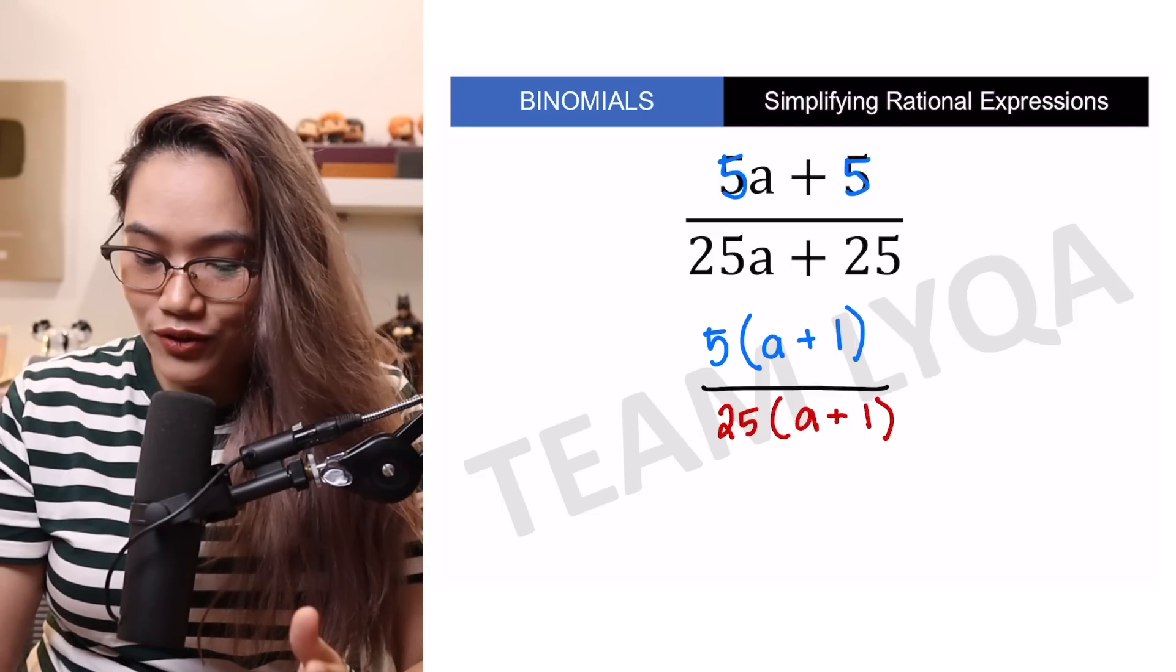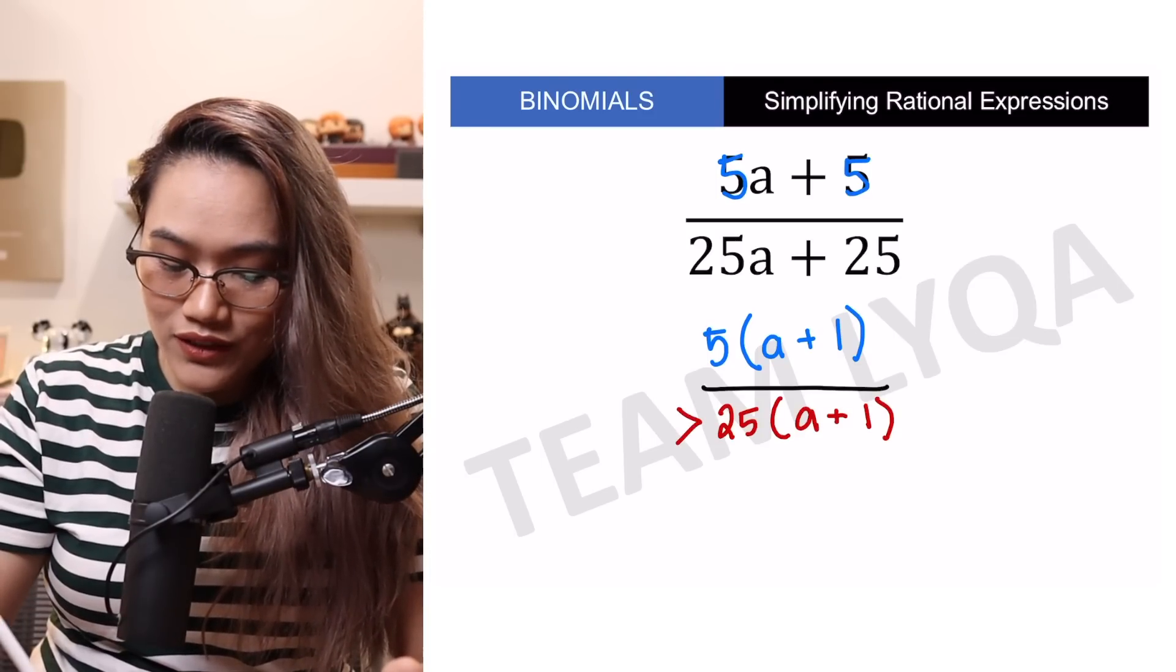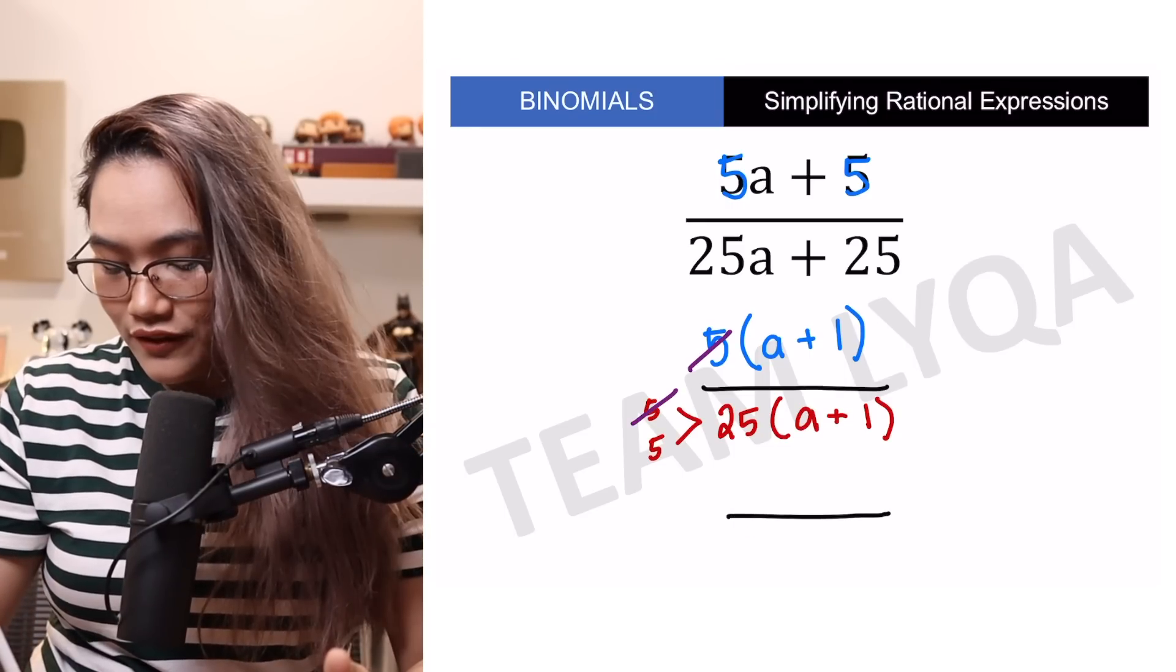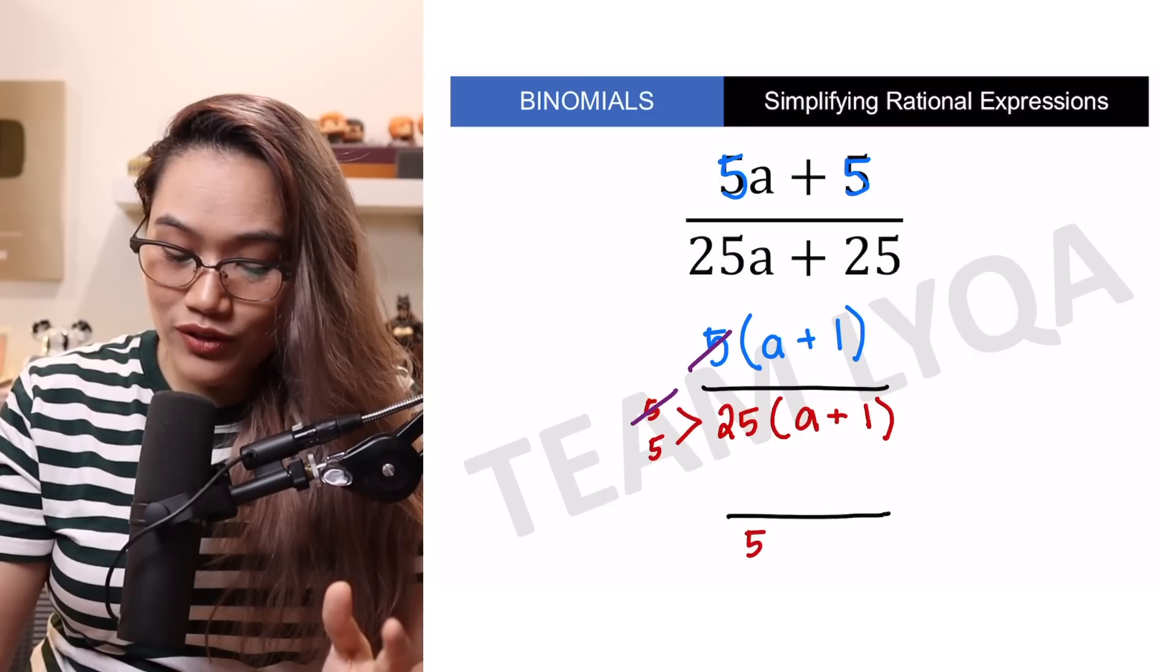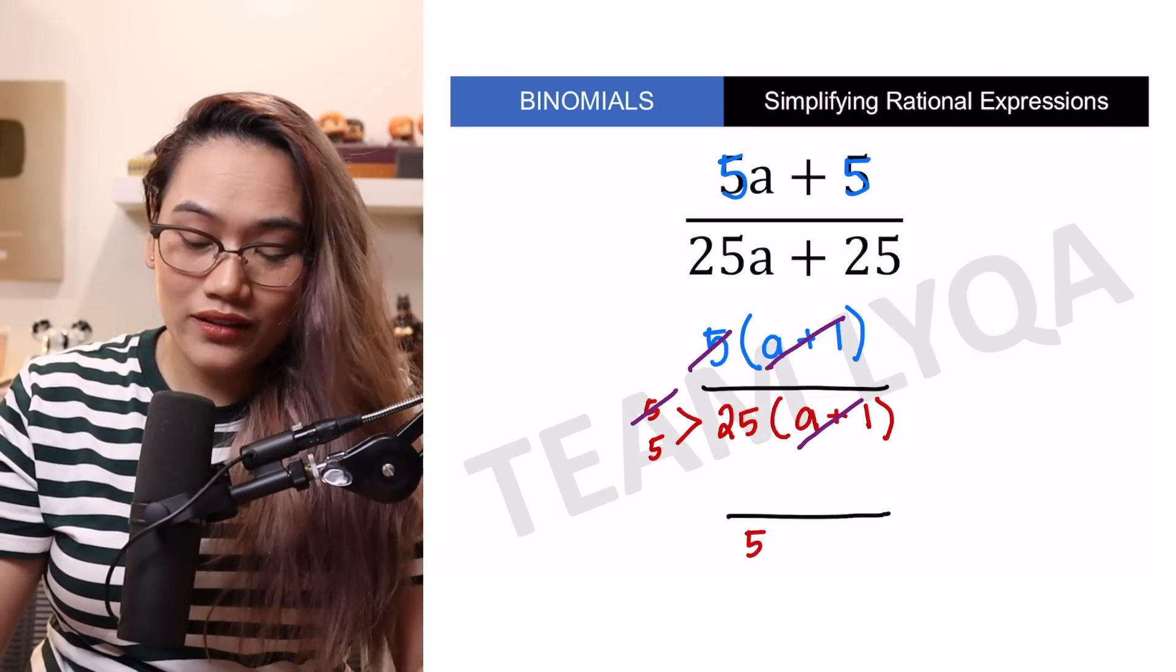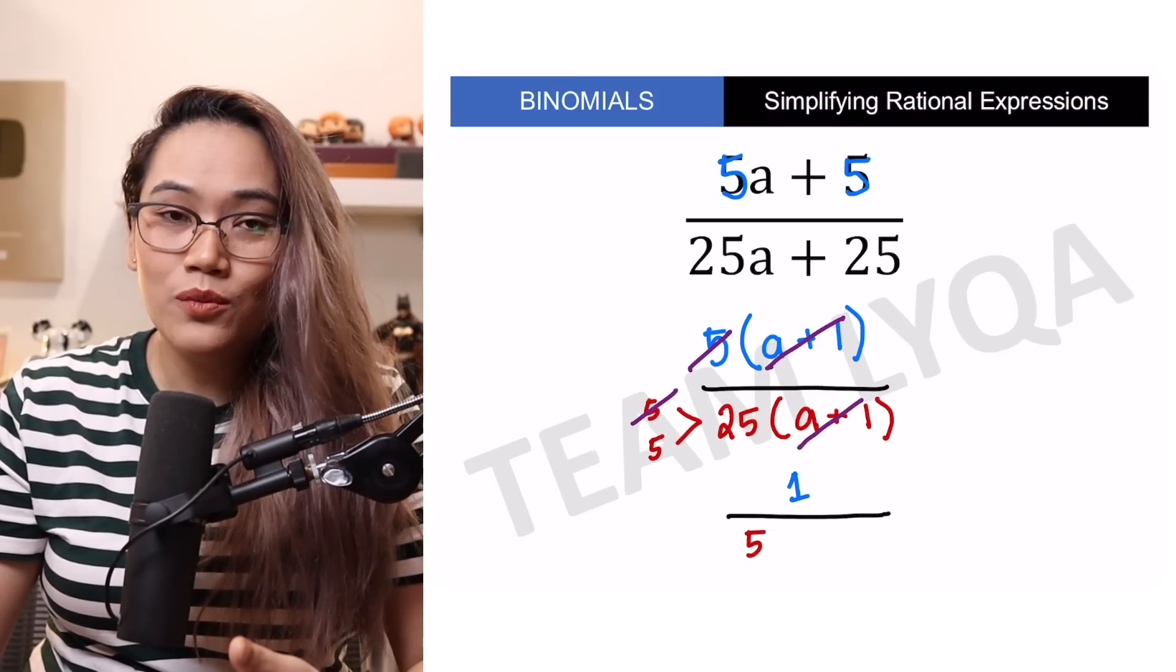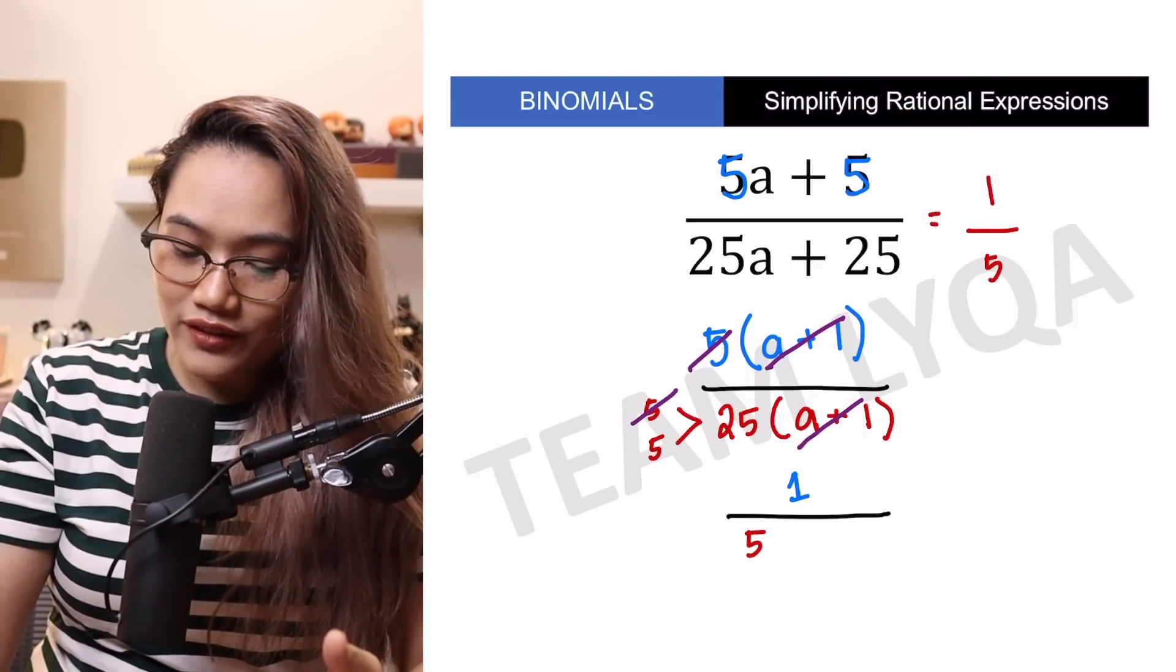Now that we have this, you can just cancel kung ano yung pareho. At dahil yung 5 at 25 ay parehong divisible sa 5, yun nga lang, yung 25 is actually two 5s, makakancel ko lamang ay isang 5. So, maiiwan sa ilalim yung isang 5. Sa taas, meron akong quantity A plus 1. Meron din nun sa ilalim, so pwede ko rin itong i-cancel sa taas at sa ibaba, which means this will just be 1. So, ang final answer natin, 1 over 5 na lang.